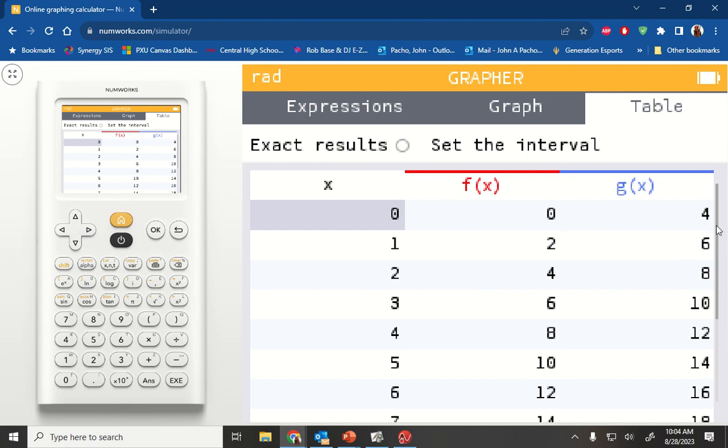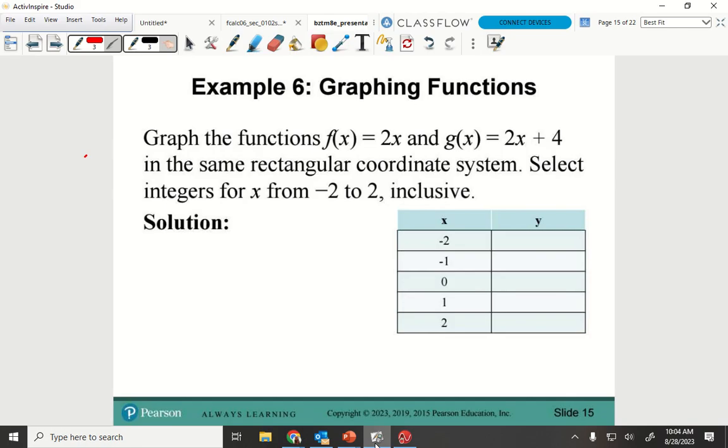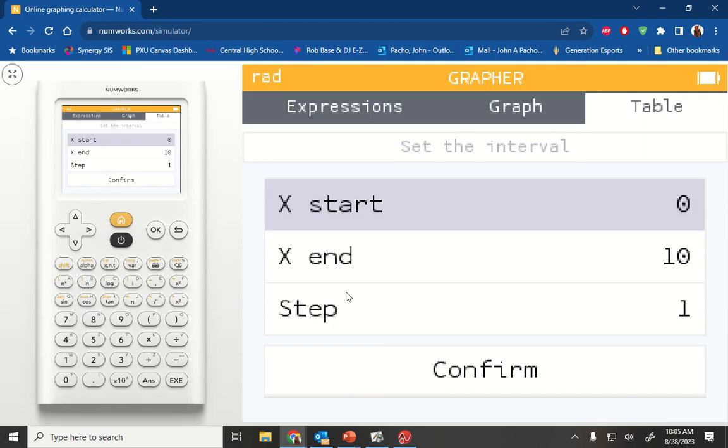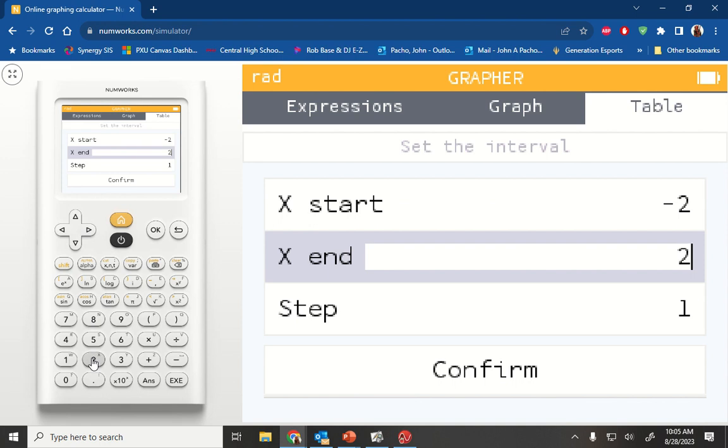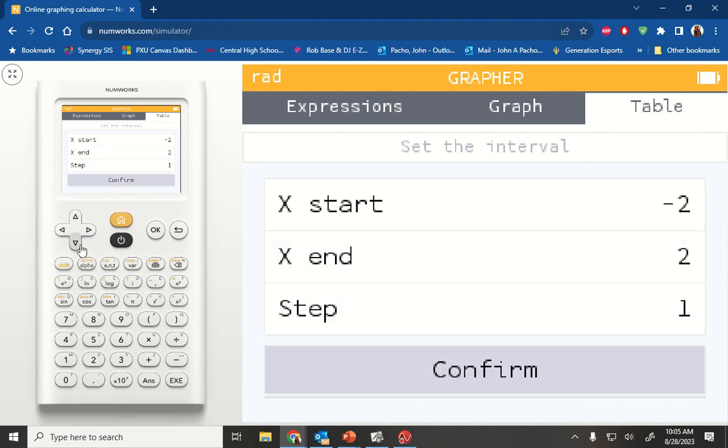What was that one little thing that we changed last time so we could actually have all the numbers I wanted? Anyone recall from Friday? Set the interval. Set the interval, right? So arrow up and let's set the interval. And if I was paying attention, it says select integers from negative 2 to 2, inclusive.